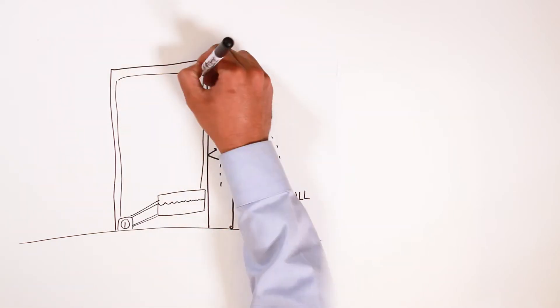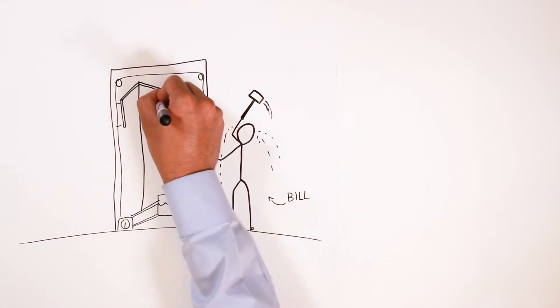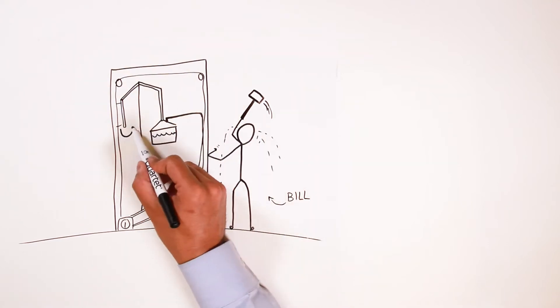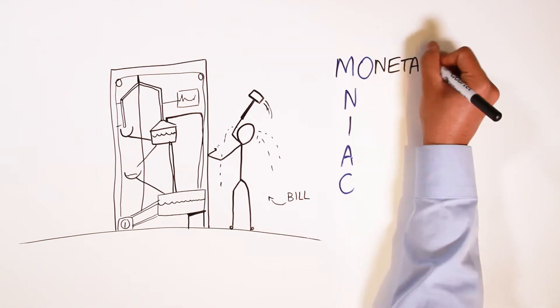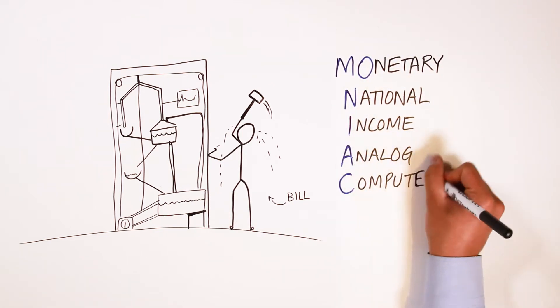And when we say build a model of the economy, he was literally building a model out of surplus war parts. The model was a six-foot-high contraption that was later called the MANIAC, the Monetary National Income Analog Computer.